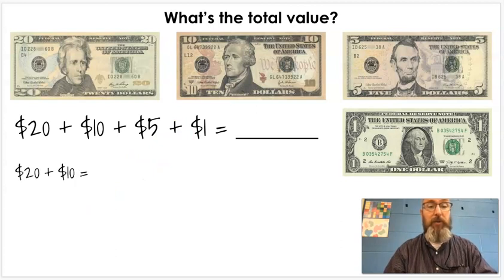So, the first thing we're going to do is we're going to add the first two numbers, twenty and ten. The reason I start with these bigger bills is because it's just counting by tens, which makes it a little bit easier. So, if you have $20 + $10, we go one more ten, and twenty plus ten is thirty.